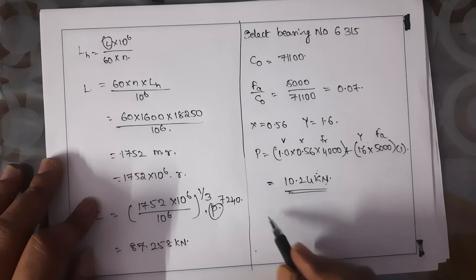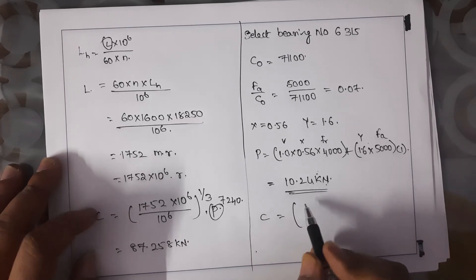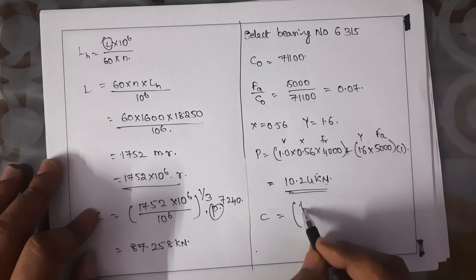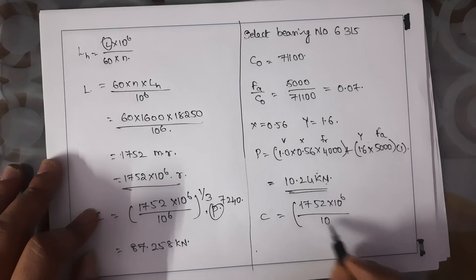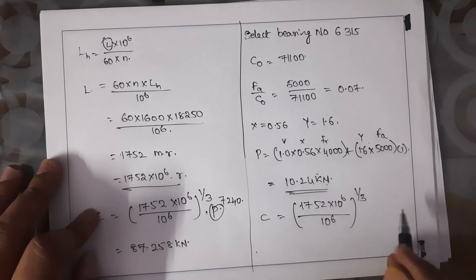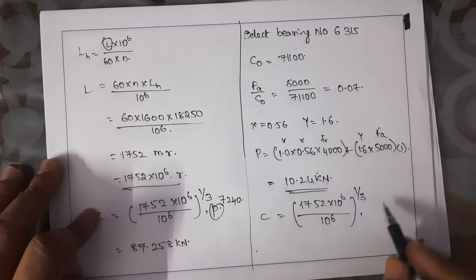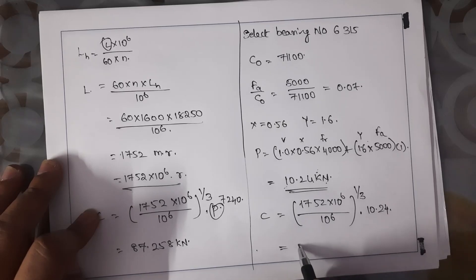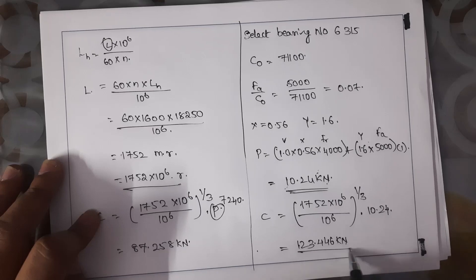Finally, we recalculate the dynamic capacity with the updated equivalent load: C = (1752)^(1/3) × 10240 = 123.446 kilo-Newtons. This value is greater than the bearing's rated dynamic capacity, so we verify whether bearing 6315 satisfies the required life condition.